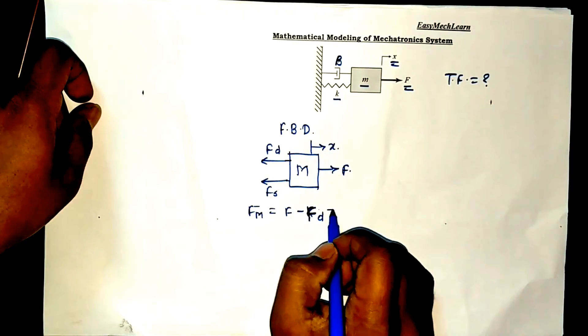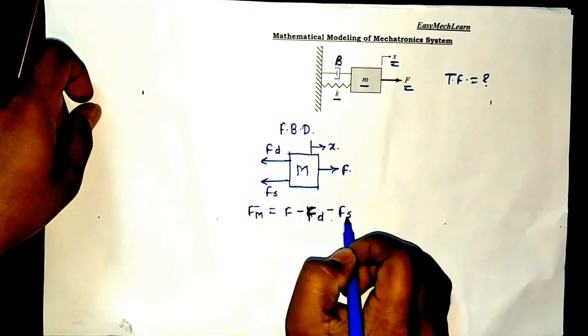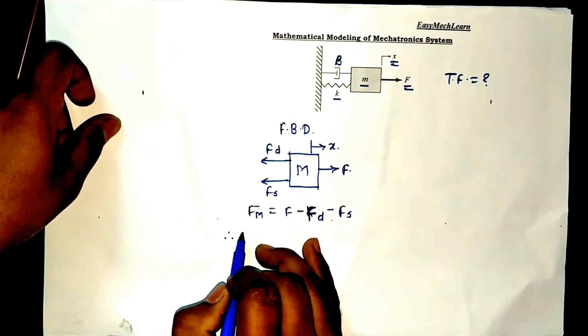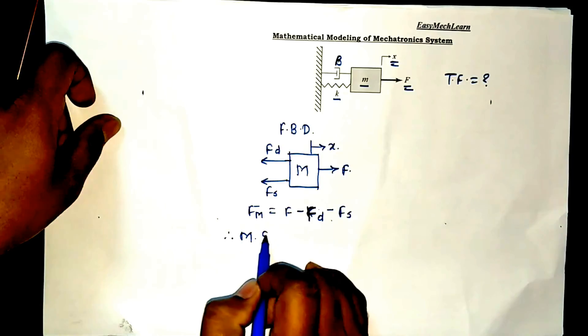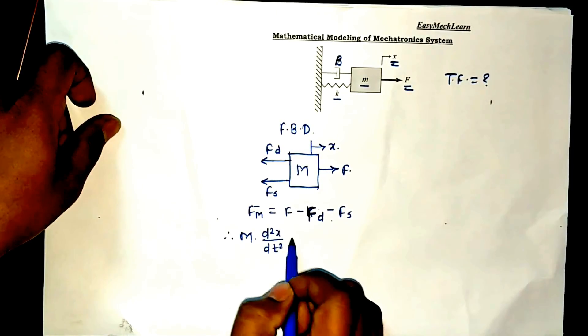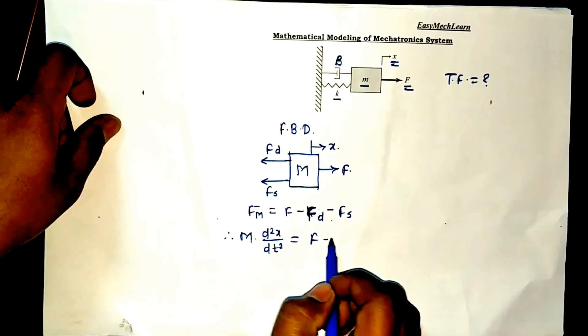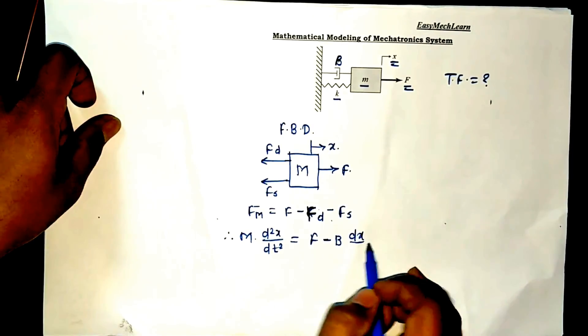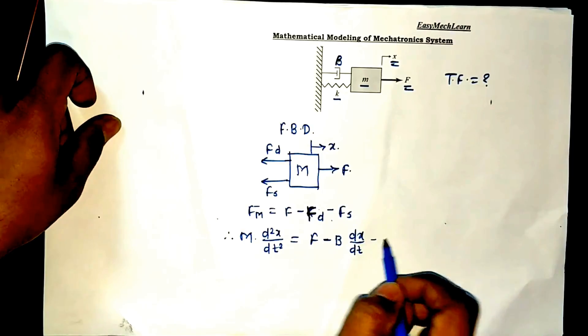Force is because of inertia: M into d2x by dt2. F minus B into dx by dt minus K into x. This is the second order differential equation.